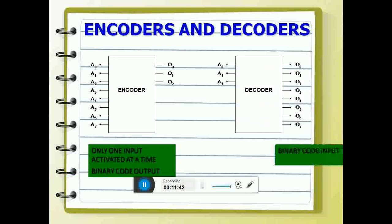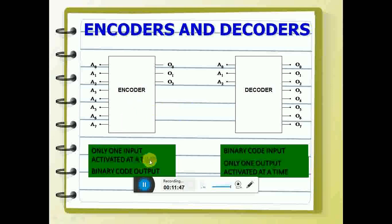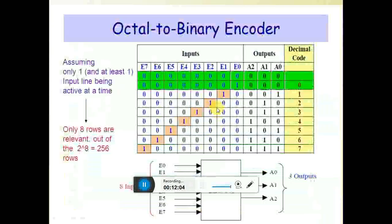In a nutshell: an encoder has one input activated at a time and gives binary coded output. A decoder has only one output activated at a time and accepts binary code input. Here you are converting octal to binary — this is referred to as an octal-to-binary encoder. Outputs are three bits. With three inputs you get 2 to the power 3, which is eight — eight is octal. If E0 is high, the corresponding code is 0 (i.e., 0,0,0); if E1 is high, the code is 0,0,1; E2 gives 0,1,0 (two), E5 gives code five, and E6 gives code six, and so on. Only one input line is active at a time.